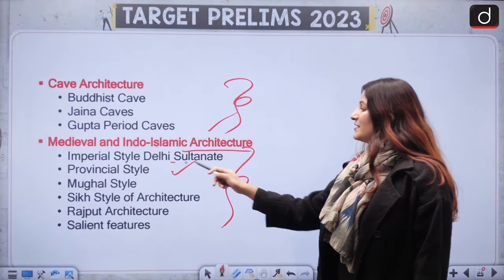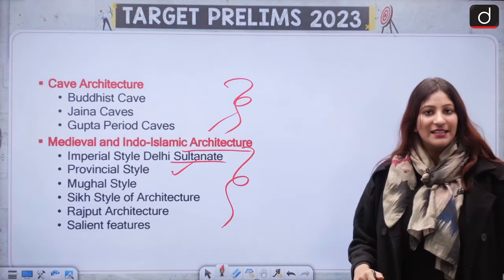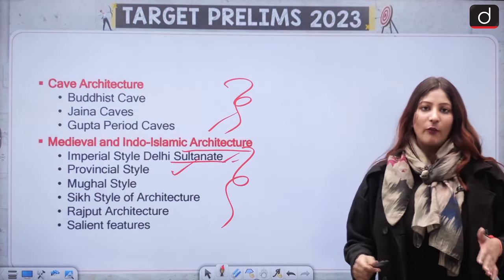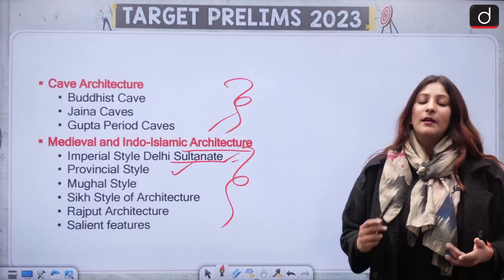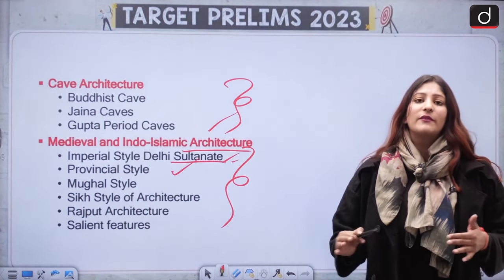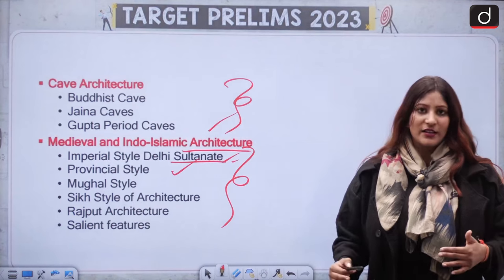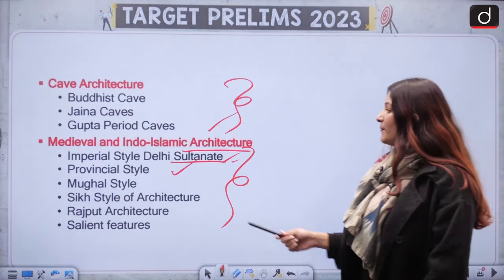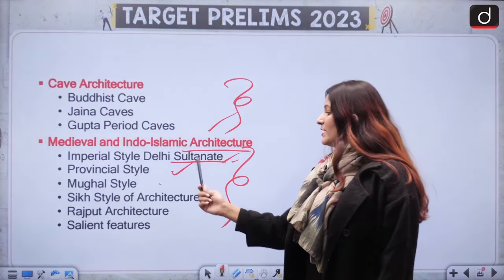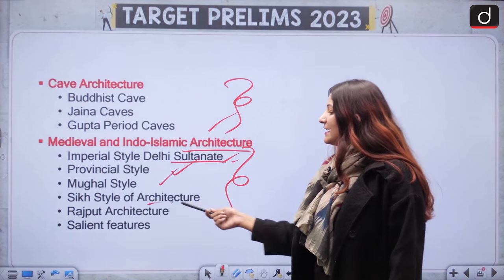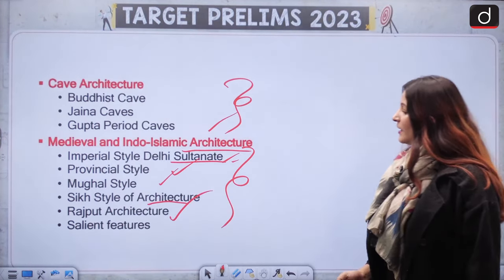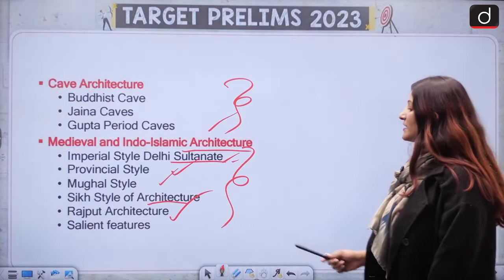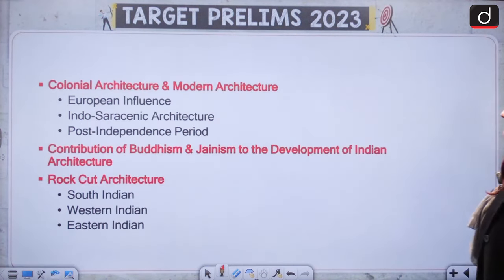Delhi Sultanate was dominant but provinces were also there — different provinces and different kings had their own style. So that is important. We also have Mughal style, Sikh style of architecture, Rajput architecture, and their salient features.